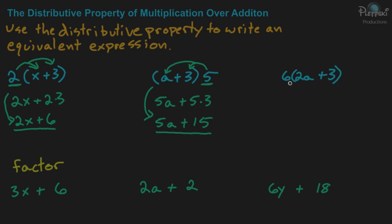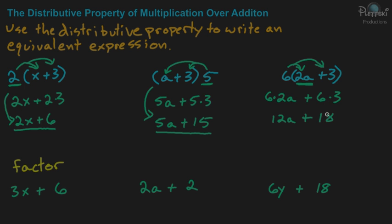This last one — the only thing different here is you already have a number multiplied by a variable inside the parentheses. But you're going to still distribute the 6 into each of the two terms inside the parentheses. So we can write it as 6 times 2a plus 6 times 3, and now we can multiply everything out to simplify. So 6 times 2a gives you 12a, and 6 times 3 gives you 18. You keep the plus sign, and the equivalent expression is 12a plus 18.